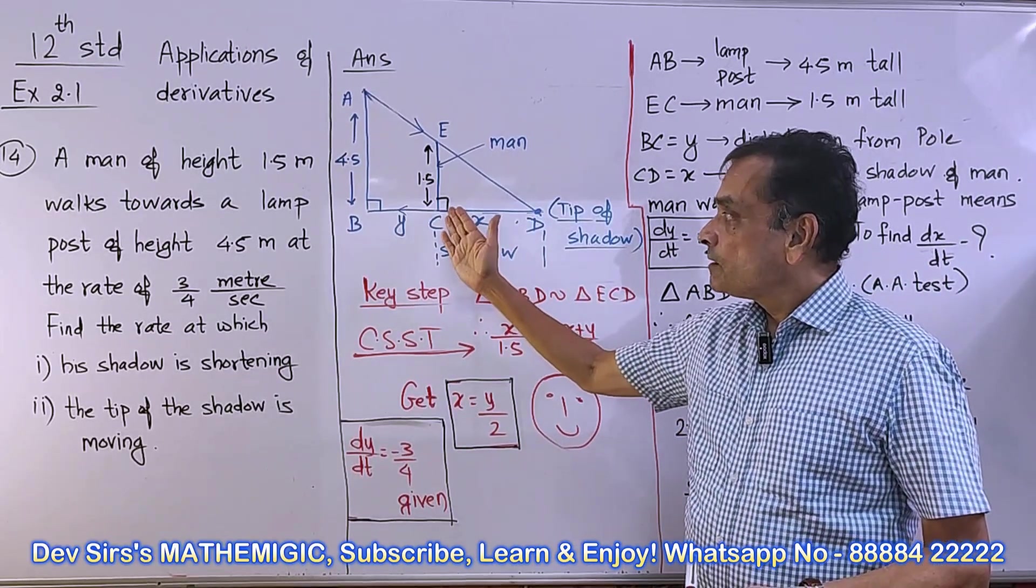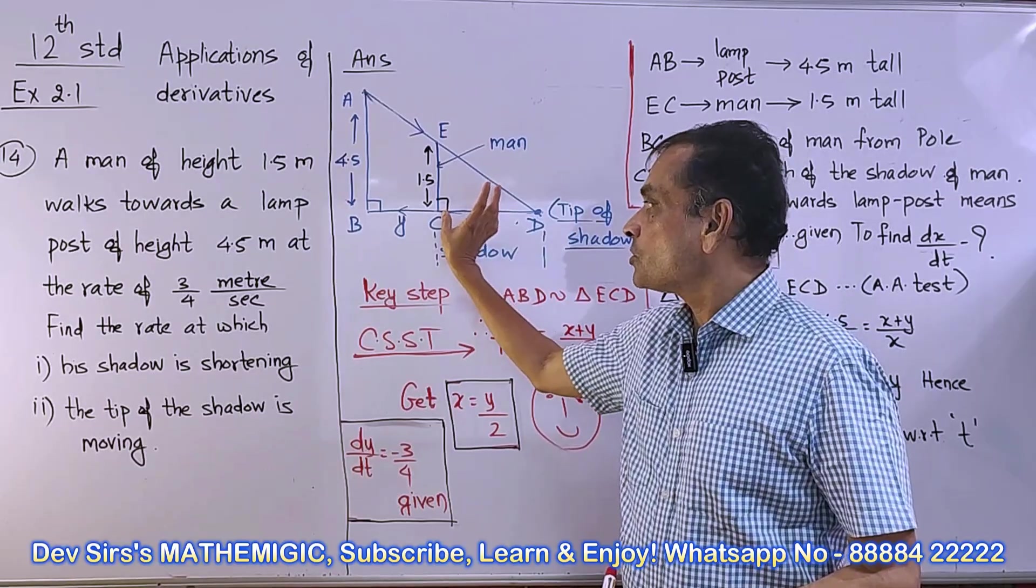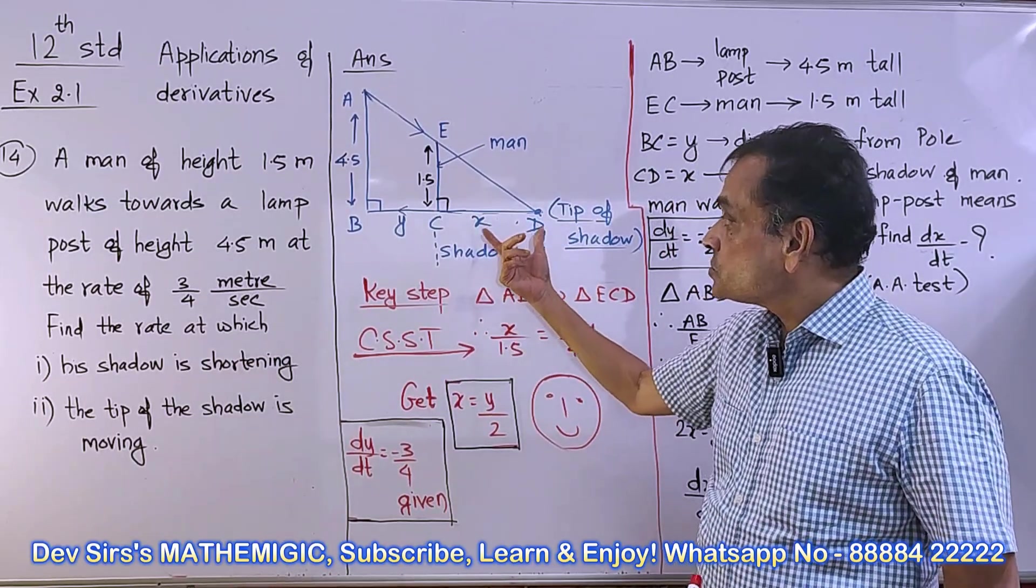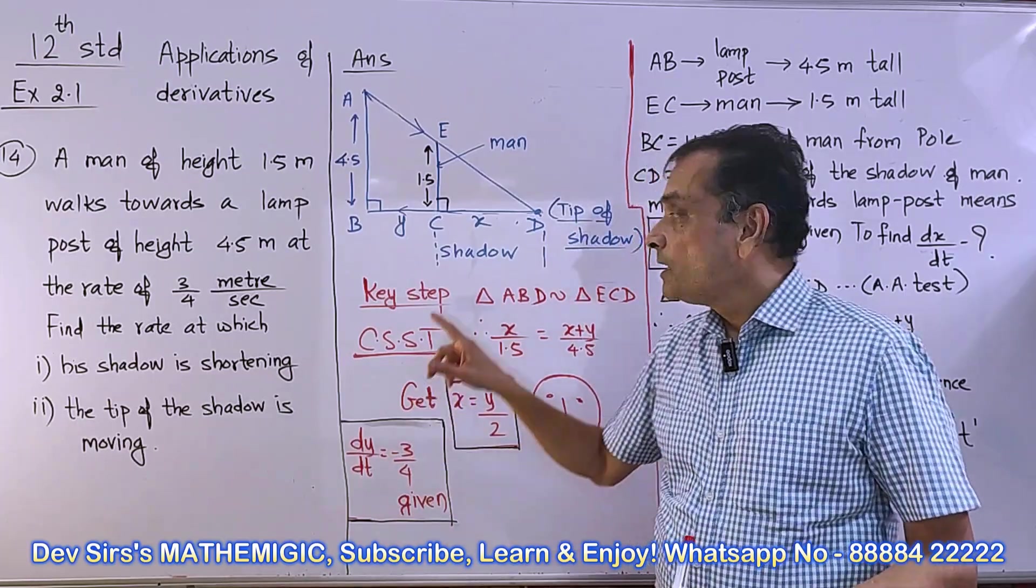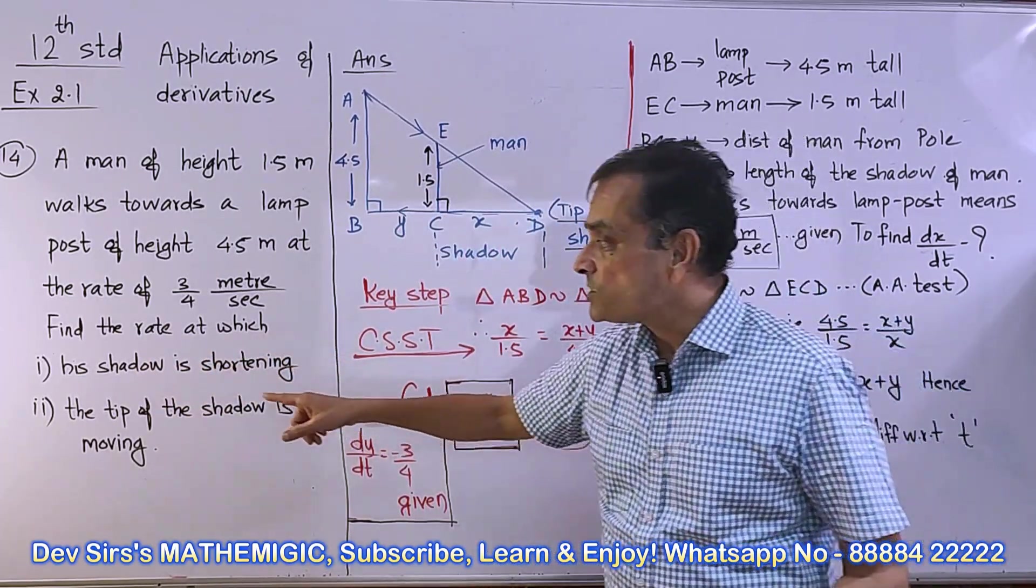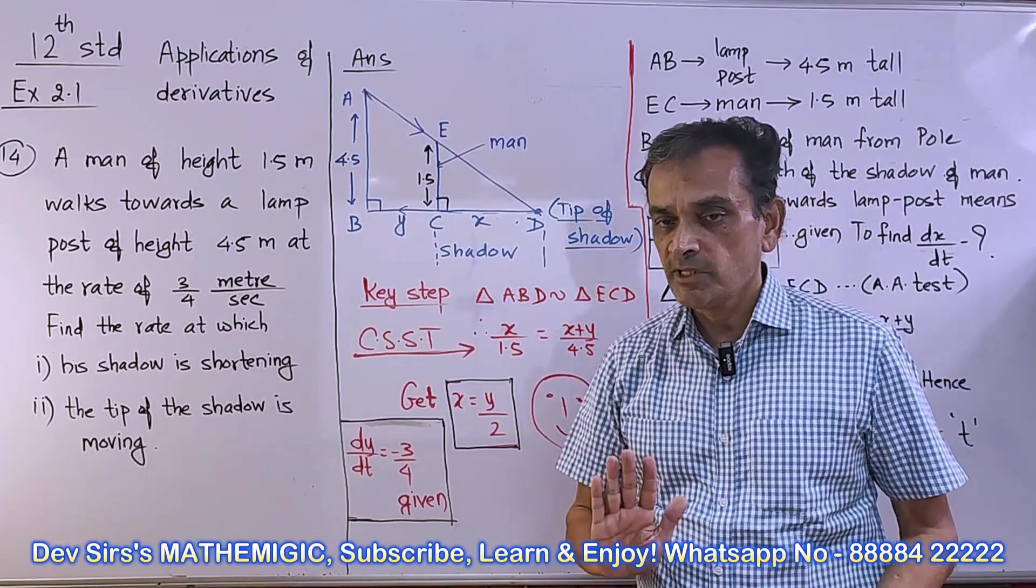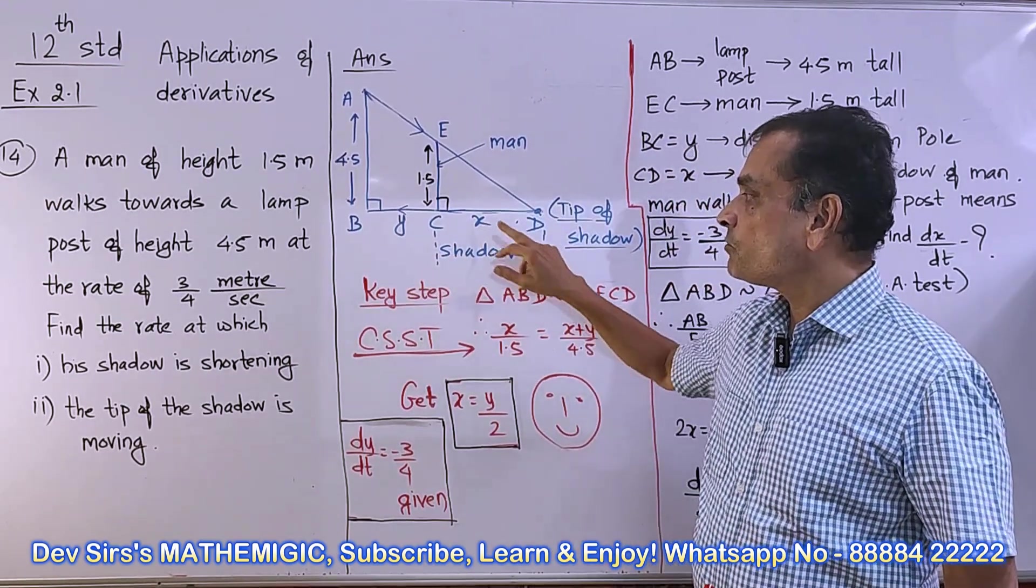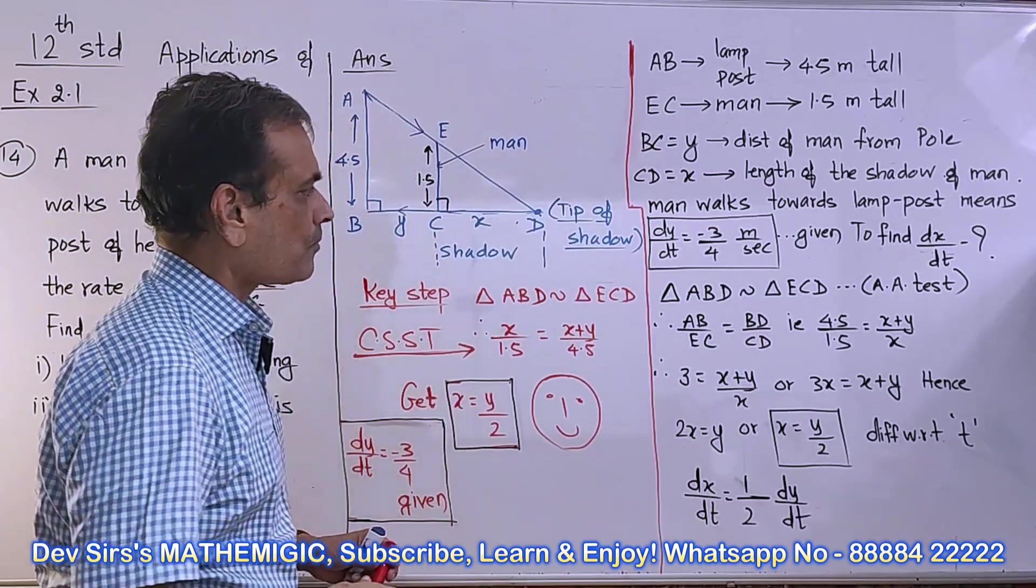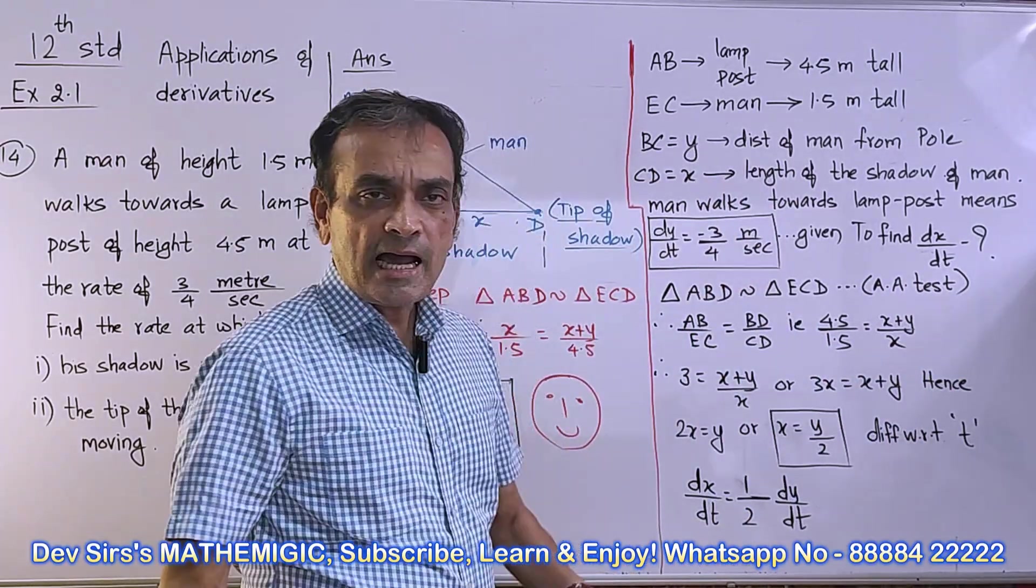When the person moves towards the lamppost, the shadow will start decreasing or shortening. If he reaches the lamppost, there will be no shadow at all. Shadow is decreasing means X is decreasing, so you have to find dX/dT. DY/dT is given, you have to find dX/dT.